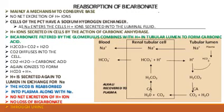The second mechanism is the reabsorption of bicarbonate — again, a mechanism to conserve base which is bicarbonate. There is no net excretion of hydrogen ions. The cells of the proximal convoluted tubule have a sodium-hydrogen exchanger. As sodium enters the cell, hydrogen ions are secreted into the luminal fluid. In the renal tubular cells, water combines with carbon dioxide, and with the presence of carbonic anhydrase it forms carbonic acid, which breaks down to give bicarbonate and hydrogen ions.